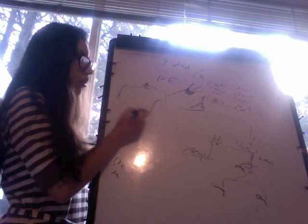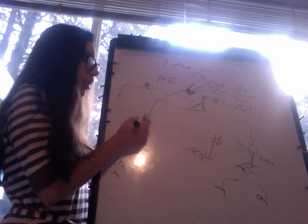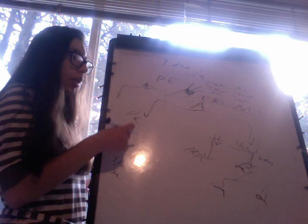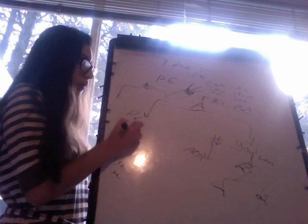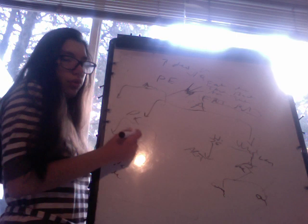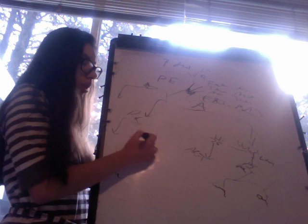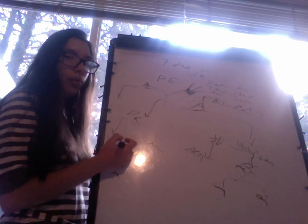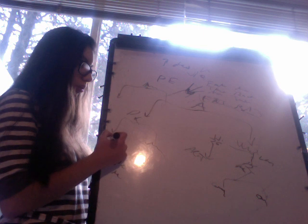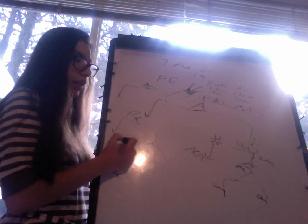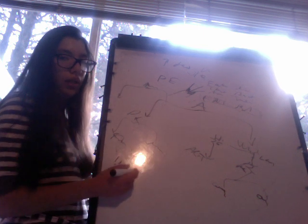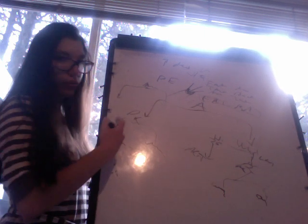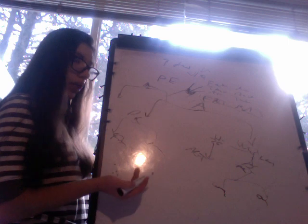If the patient cannot receive anticoagulation, we perform the diagnostic criteria — D-dimers and CT scan. If pulmonary embolism is excluded, no anticoagulation is given. If pulmonary embolism is confirmed, we place an inferior vena cava filter, because we cannot give anticoagulation.